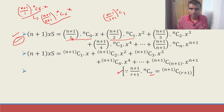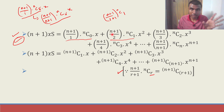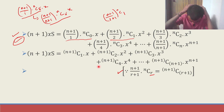Here is a technique to remember: wherever you see (n+1) by 1, just write (n+1)C1. Where you see (n+1) by 2, write (n+1)C2. (n+1) by 3 gives (n+1)C3. That is all — a simple technique to remember.